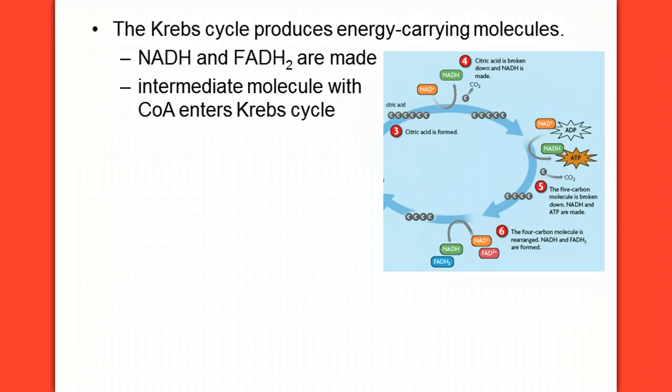The intermediate molecule, that two carbon compound that was left over from having carbon dioxide ripped off of the pyruvate, enters the Krebs cycle. That was step two, that's what we already looked at. It forms a six carbon compound that we know as citric acid. That's what's going on right here in picture three.